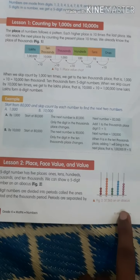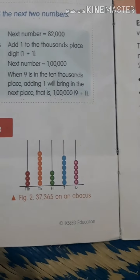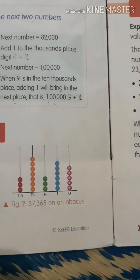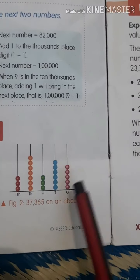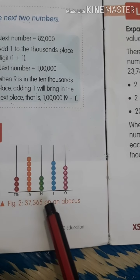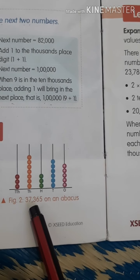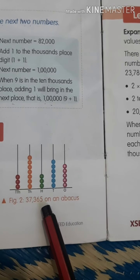This is an Abacus. In the Abacus diagram, they will write here. They are given 5, 6, 3, 7, 3. So how will you read? Ones, tens, hundreds, thousands, ten thousands. So 37,365.